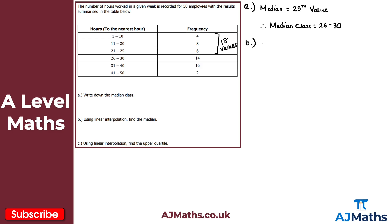Remember, this is just an estimate, not an exact answer. The way that interpolation works is we use proportion to estimate what we need — in this case Q2, which is the median. I'm going to draw a scale. We know the median lies within 26 to 30.